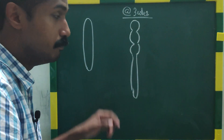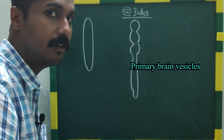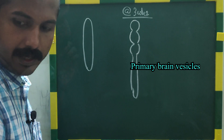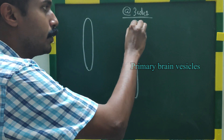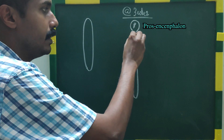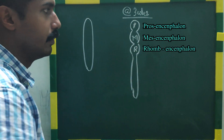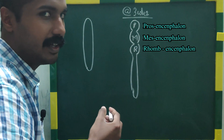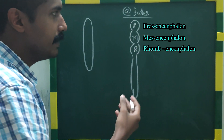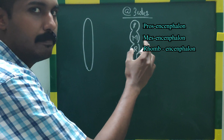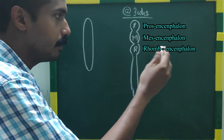These 3 are the most primitive brain vesicles. By the word vesicle we mean bubble, and these 3 are termed as the prosencephalon, the mesencephalon, and the rhombencephalon. The words are Greek. Prosencephalon means the forebrain.